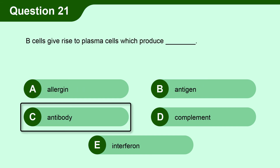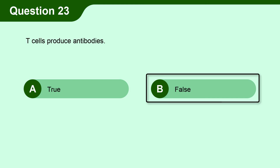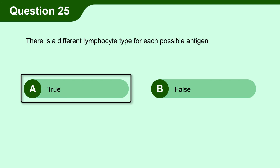Question 21. B cells give rise to plasma cells which produce C. Antibody. Question 22. Antibodies bind with antigens in a lock and key manner. A. True. Question 23. T cells produce antibodies. B. False. Question 24. Certain T cells attack and destroy antigen-bearing cells. A. True. Question 25. There is a different lymphocyte type for each possible antigen. A. True.